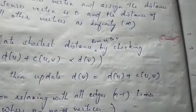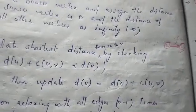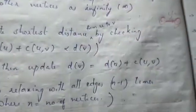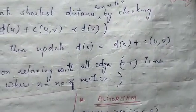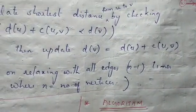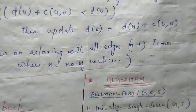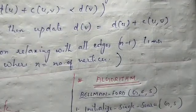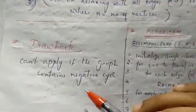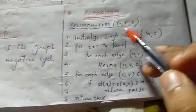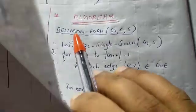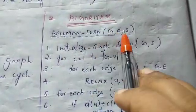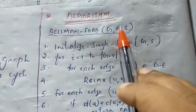Now, we have to relax edges. We adjust based on how many vertices are in the graph. The number of iterations is determined by the number of vertices.